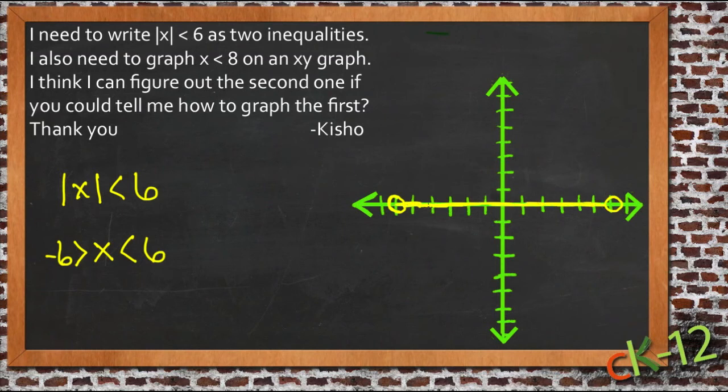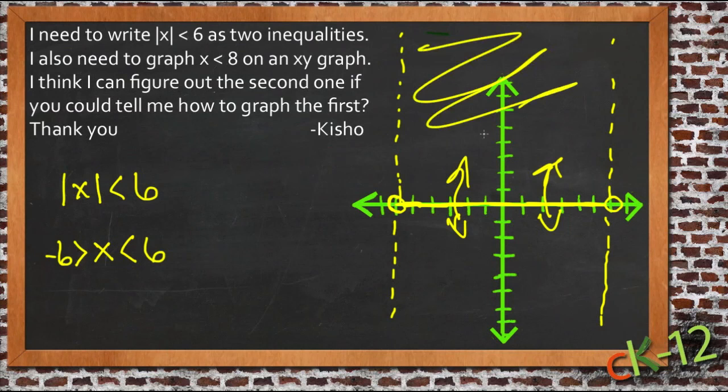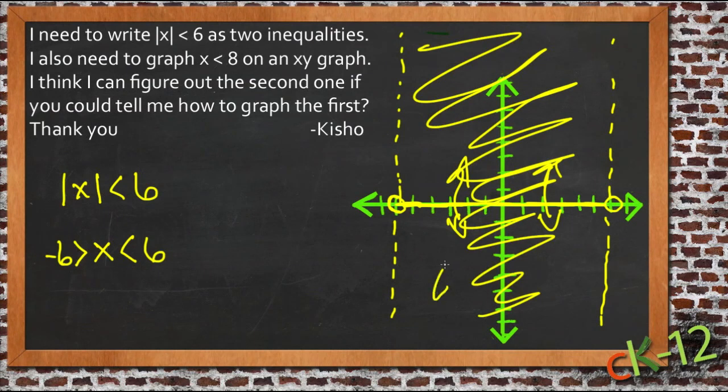Well, now since we're doing it on the xy-graph, we also have to include all the values in both directions, up and down, that would be in that same sort of interval on that graph. So we draw our dashed line here showing that that open circle continues up and down here and here, and since x is everything in between, we shade everything in between those two dashed lines on our xy-graph.